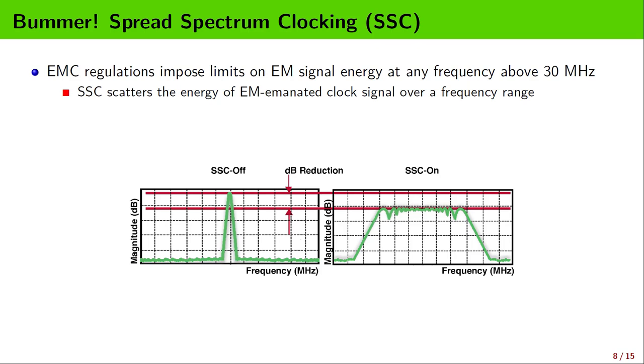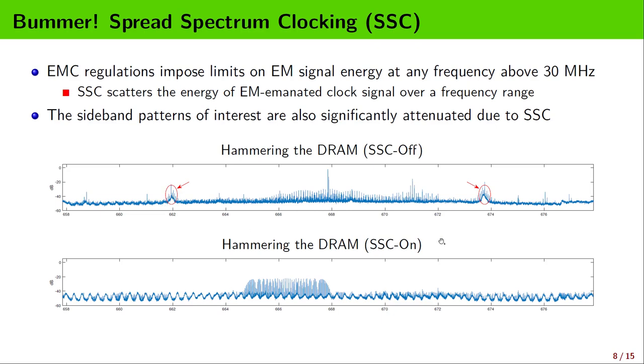Now let's move on to the other problem caused by the use of SSC, which stands for spread spectrum clocking. Why is SSC used? Because there are electromagnetic compatibility regulations in almost every country. These regulations impose limits on the energy of EM signals issued from electronic devices at any frequency above 30 MHz. Many high-frequency clock signals in a computer system, including the DRAM clock, are strong enough to violate the legal limits. So SSC is used to vary the clock frequency over a range, such that the energy is spread over that range. Unfortunately, SSC can make the hammering correlated sideband patterns unrecognizable.